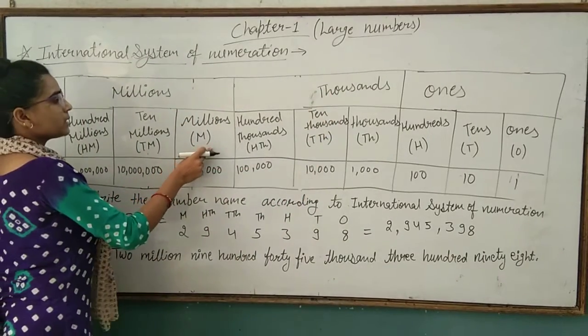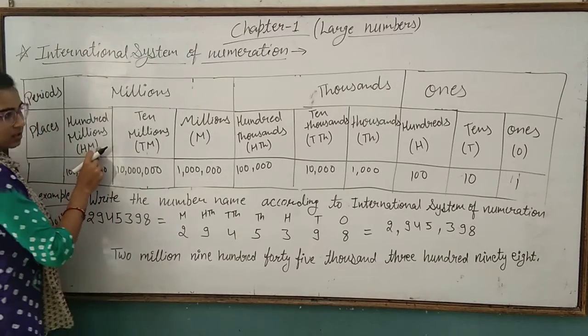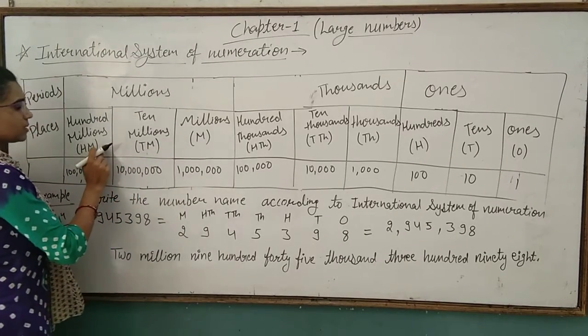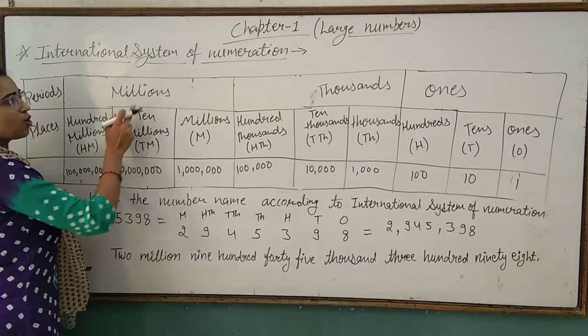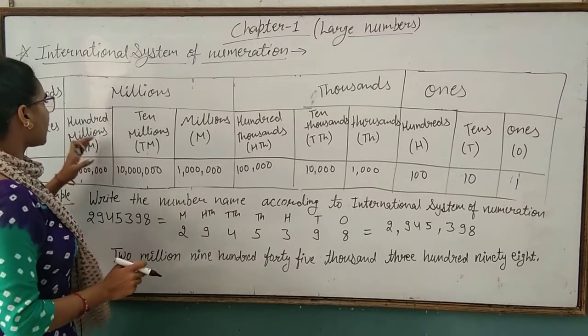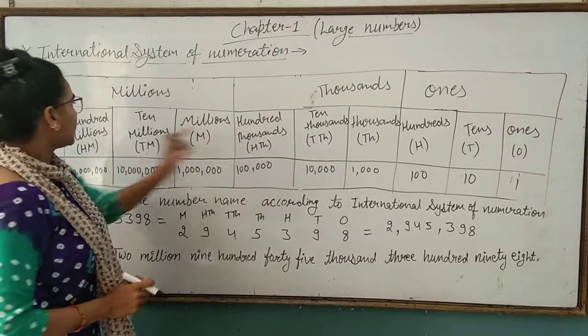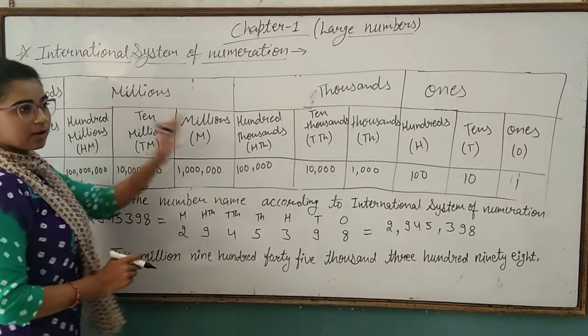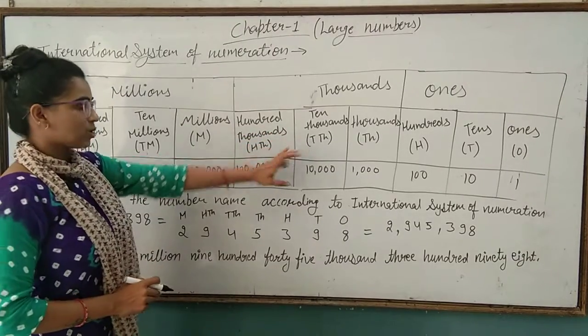And millions: millions, ten millions, and hundred millions. These three together make our millions period. From hundred thousands to hundred millions, the values increase.